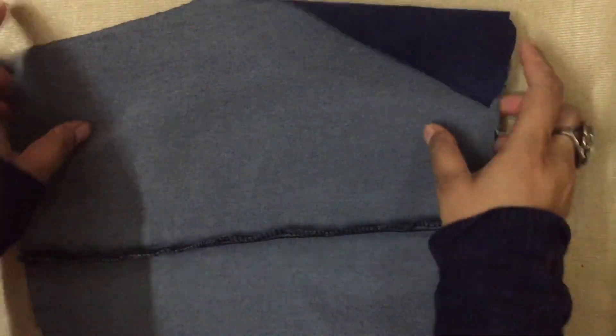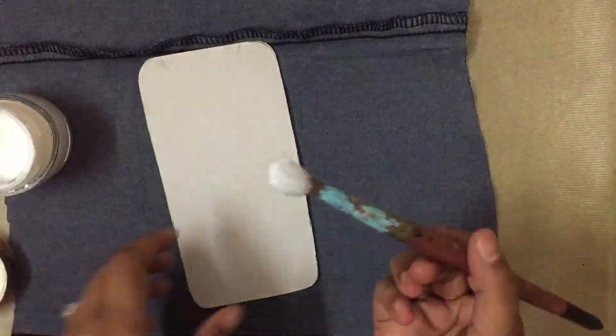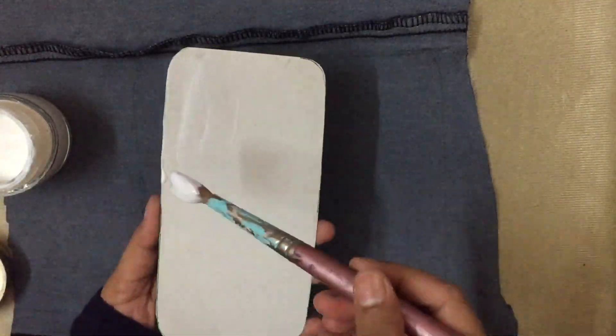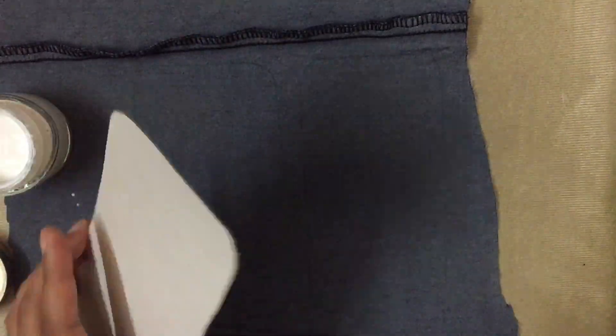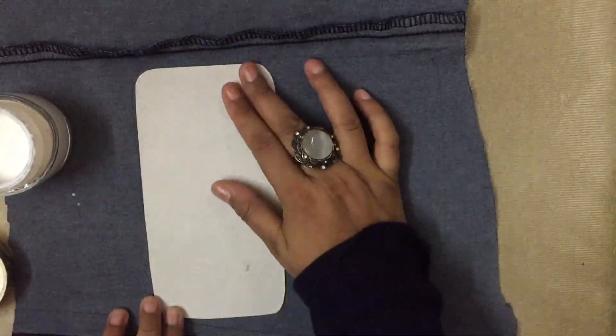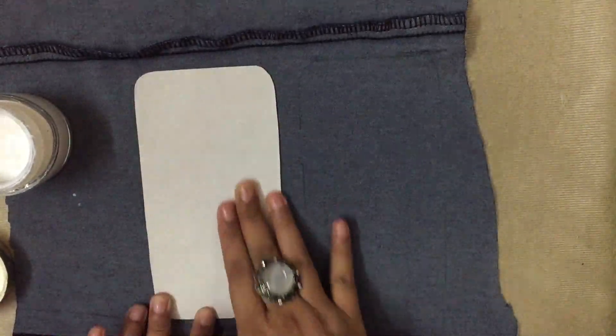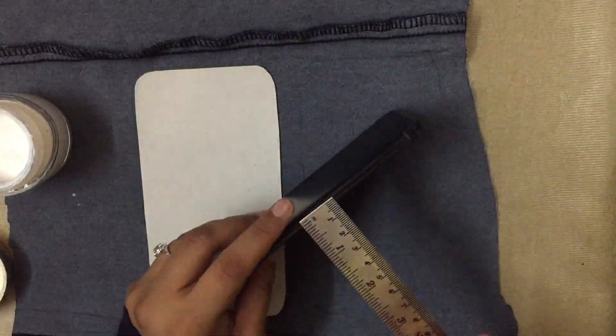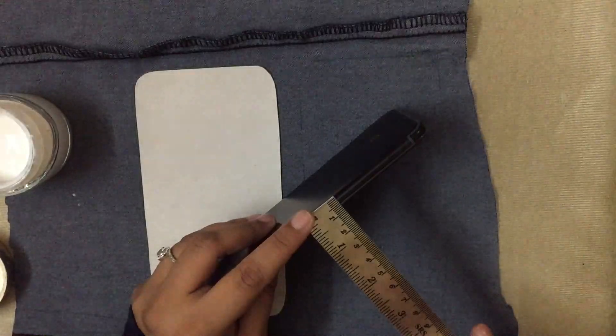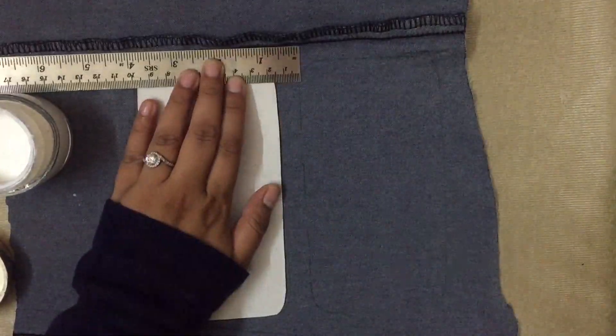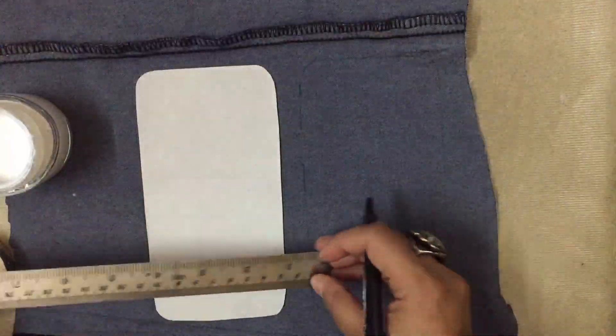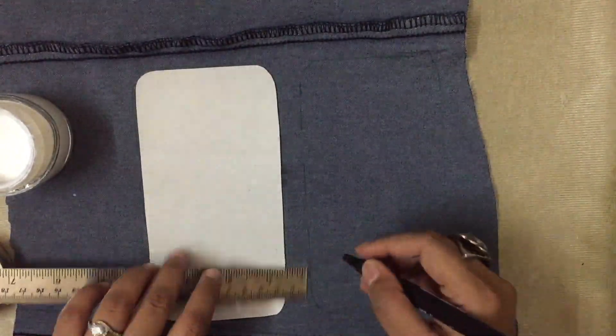Next, take any fabric of your choice. I'm using a denim fabric. Then take some white glue and apply it on the front piece. Glue the front piece to the fabric like so. Now take your phone and measure the thickness of the phone.